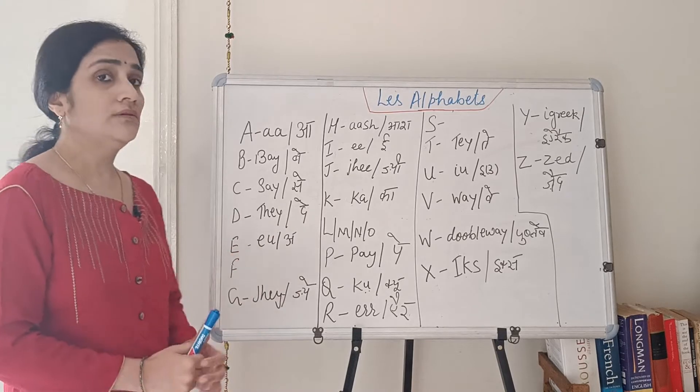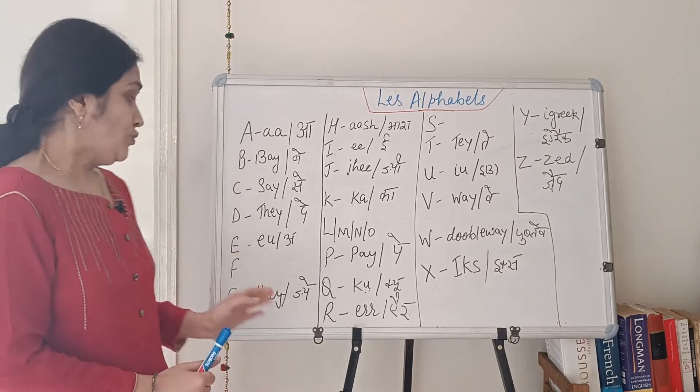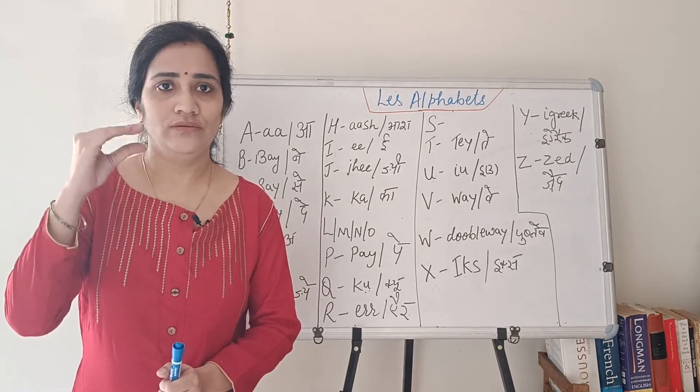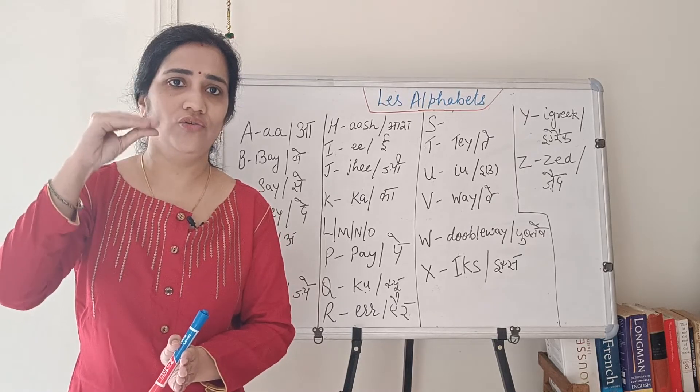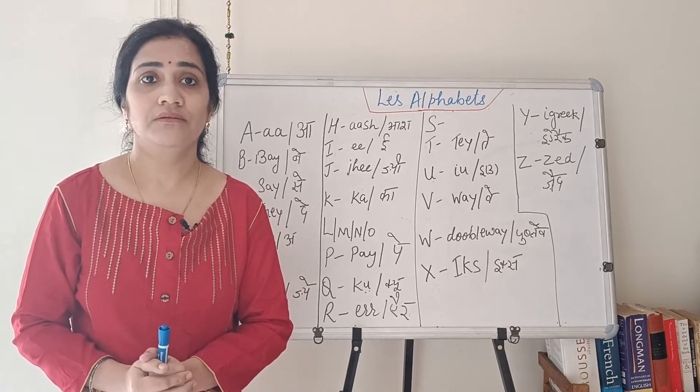E sounds A. So for this letter, what do you have to do? You have to suppress your upper and lower jaw a little bit. Suppressing your upper and lower jaw, and then you have to pronounce A.